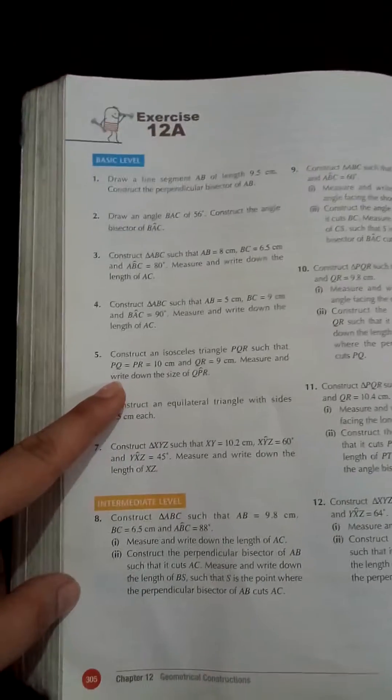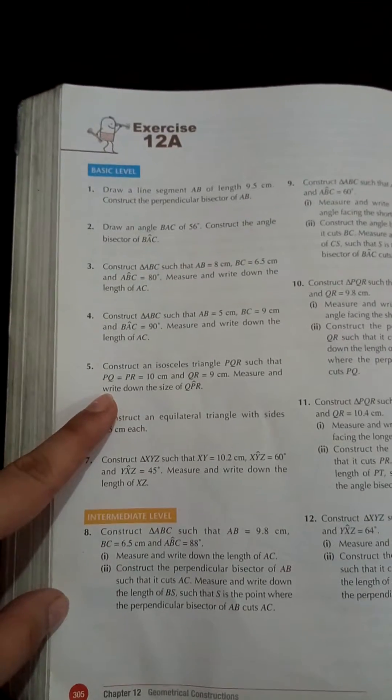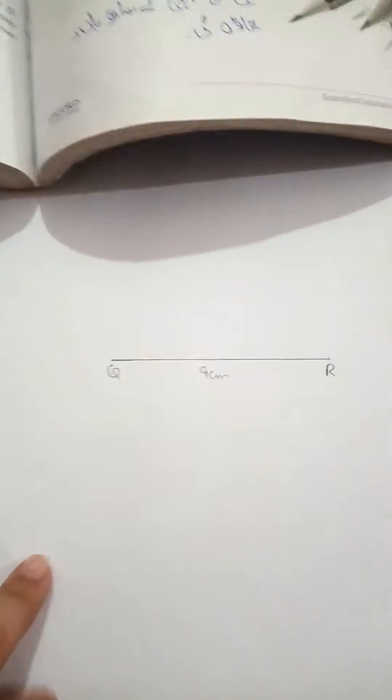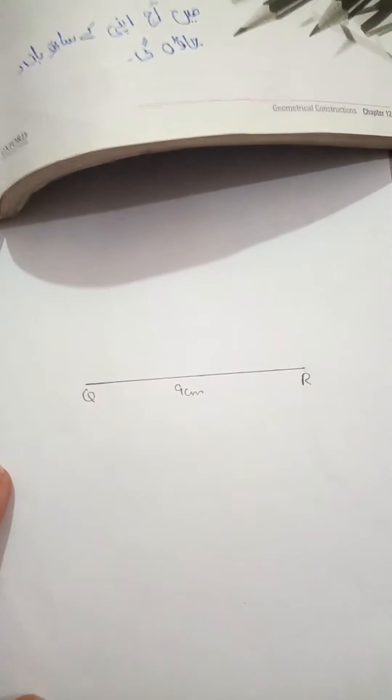And QR is equal to 9 centimeters. We will draw the sides PQ and PR. So first of all, I'm taking the line segment QR as a baseline with a length of 9 centimeters.